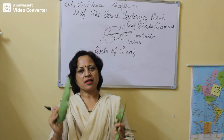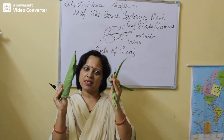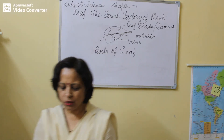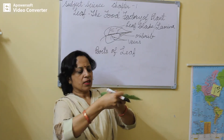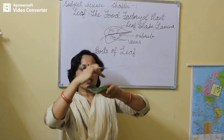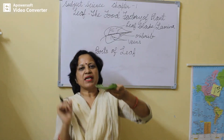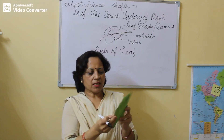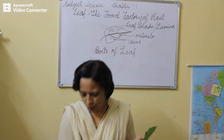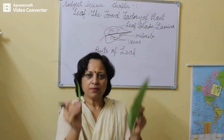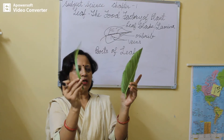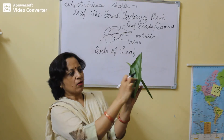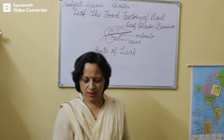Alag-alag plants ki leaf alag-alag shapes aur sizes ki hoti hai. Aap dekhiye, leaves ka jo broad part hota hai, yeh jo chowda part hota hai, isse hum bolte hain leaf blade ya lamina. Yeh chowda part narrow bhi ho sakta hai aur broad bhi ho sakta hai. Dekhiye, narrow bhi ho sakta hai aur broad bhi ho sakta hai — yeh kitna patla hai aur iska yeh part kitna chowda hai.